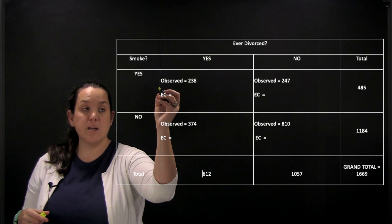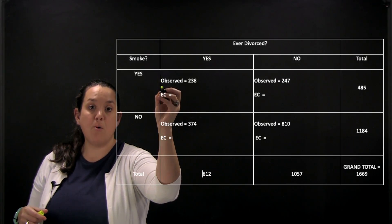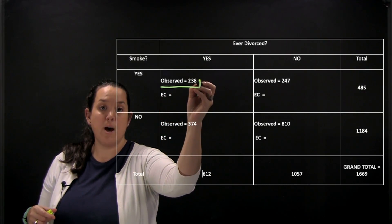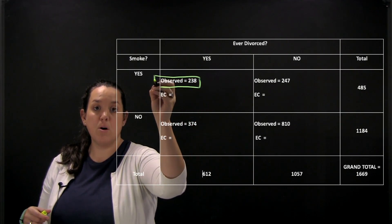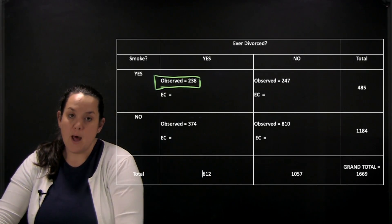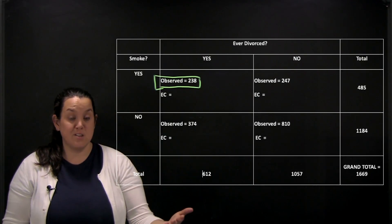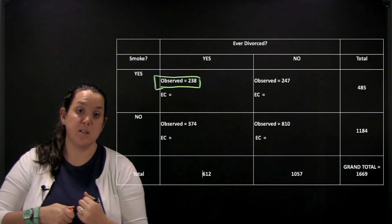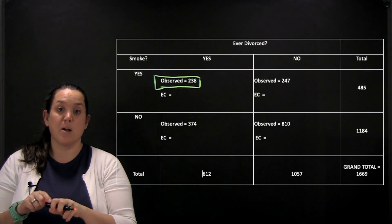So in a contingency table you always have two counts. You have an observed count which is going to tell you what you actually saw in the data. And then when you start to make inferences you'll add a second count to each cell which is called an expected count.